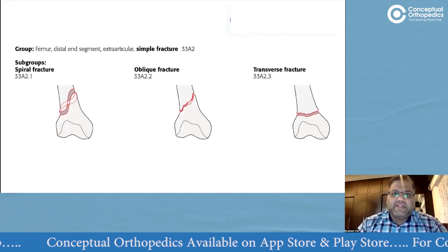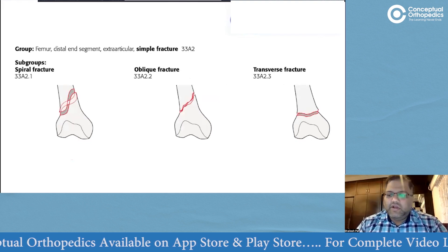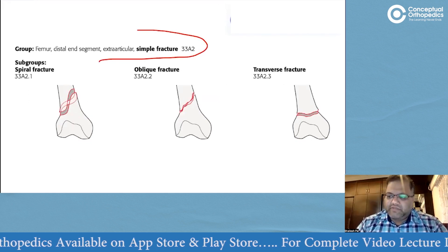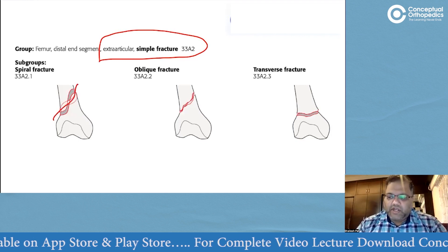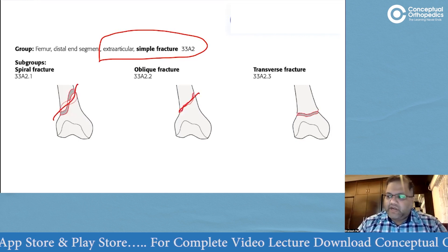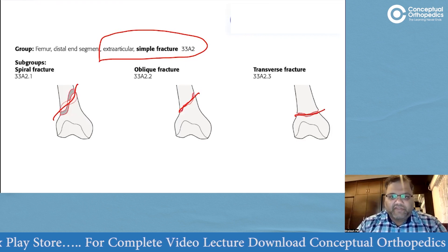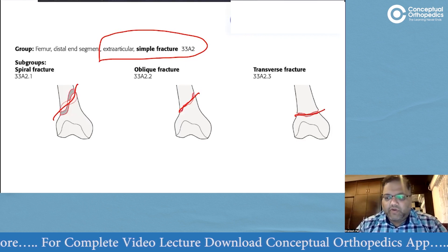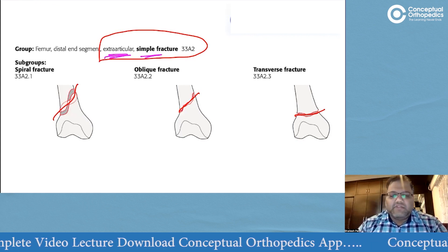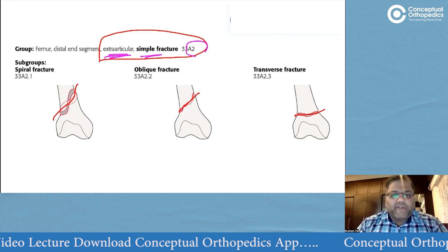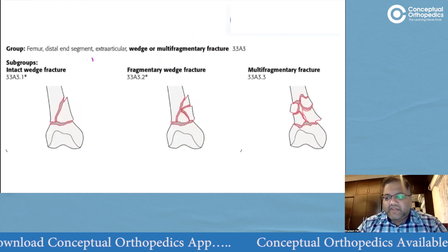Once avulsion injuries are excluded, what remains is a metaphyseal extraarticular fracture. An extraarticular simple fracture is A2: spiral is A2.1, oblique is A2.2, and transverse is A2.3. The key point to remember is that any extraarticular simple fracture of the distal femur is an A2.